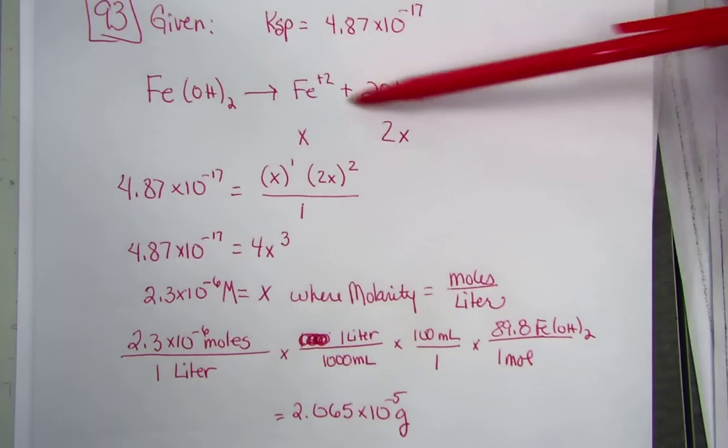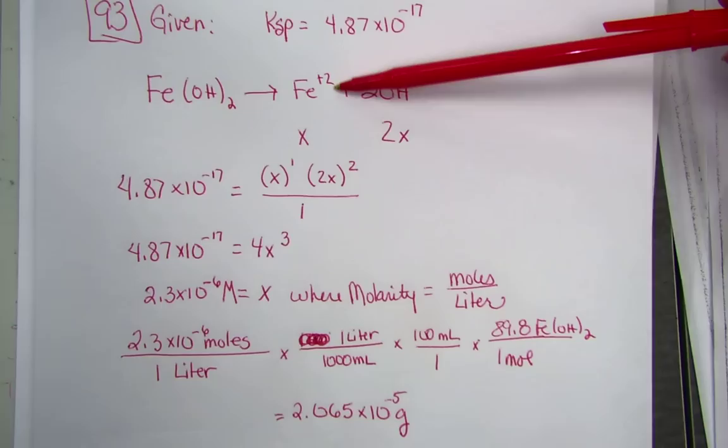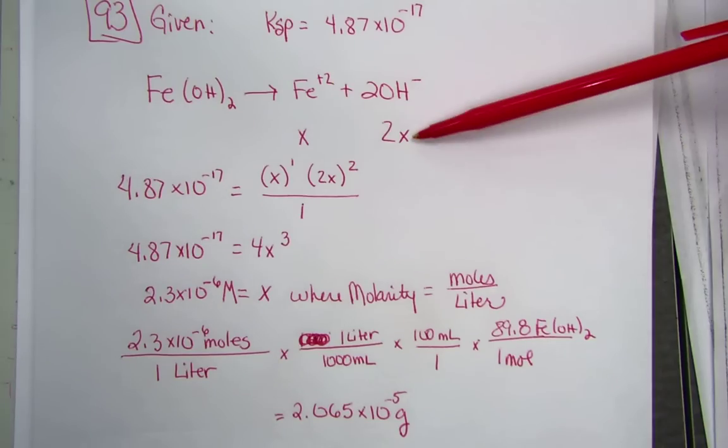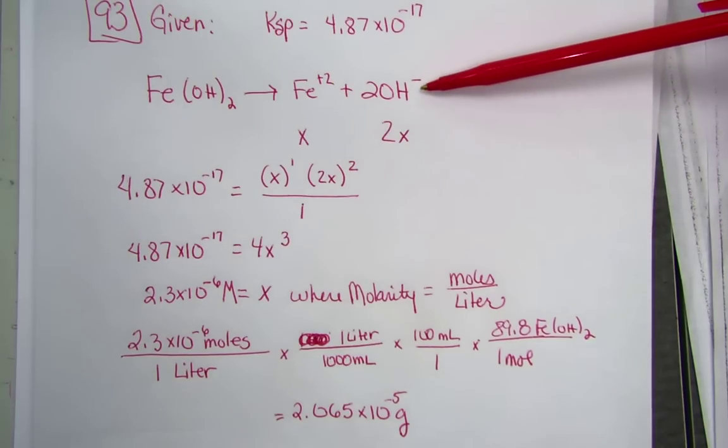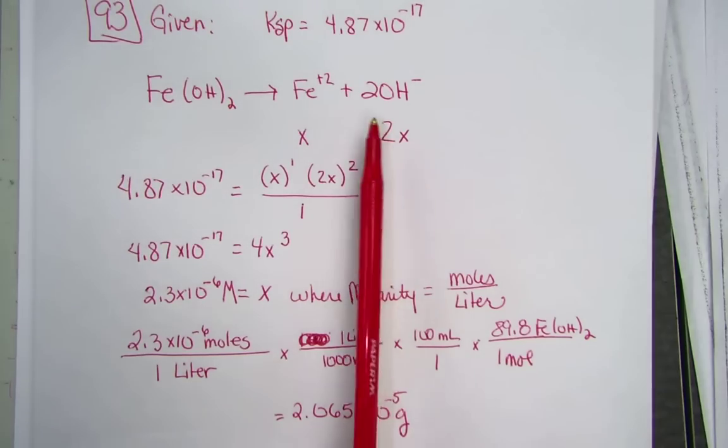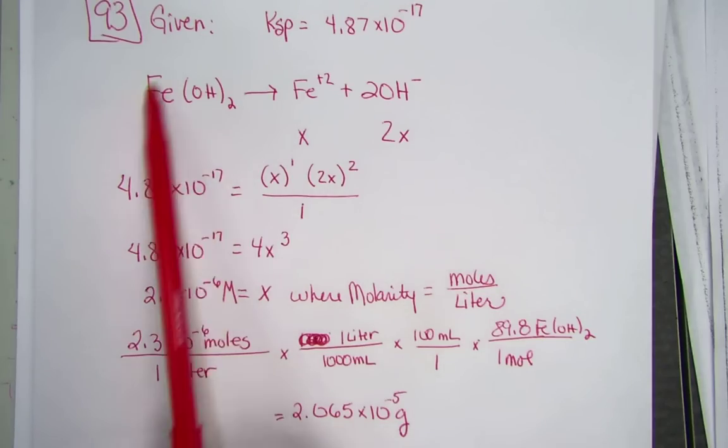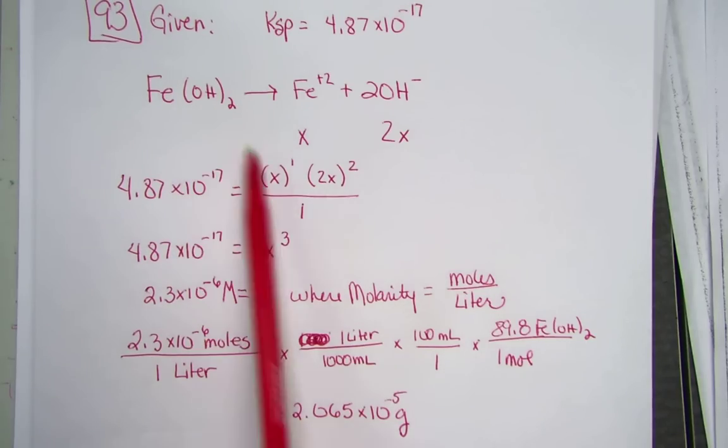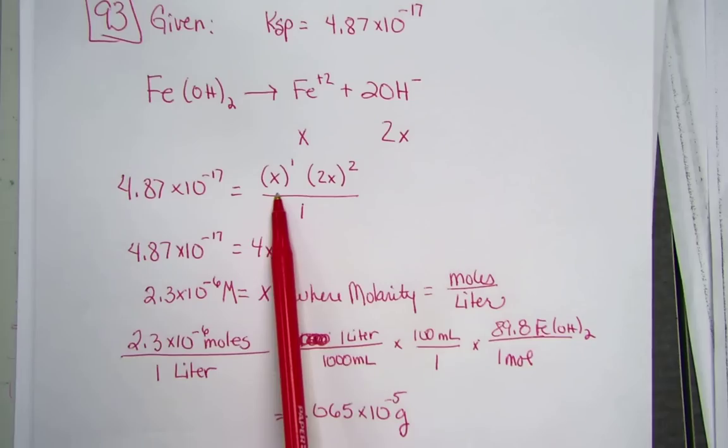What I've shown is the dissociation. We would release 1 iron with a plus 2 charge and 2 units of hydroxide at a negative 1 charge. Setting up our equilibrium expression products over reactant, but this solid salt drops out and we just represent the iron ion as x.